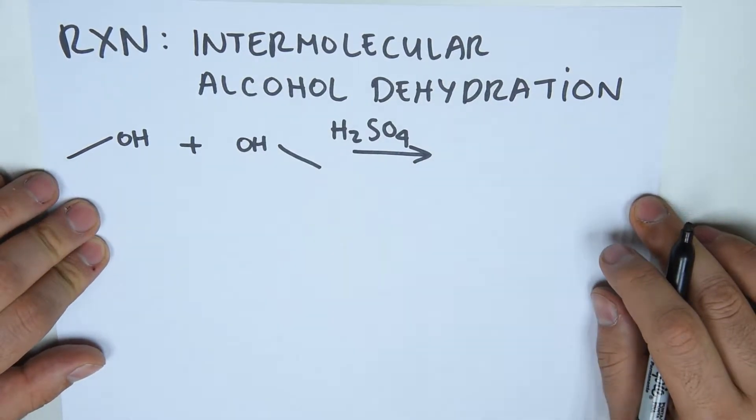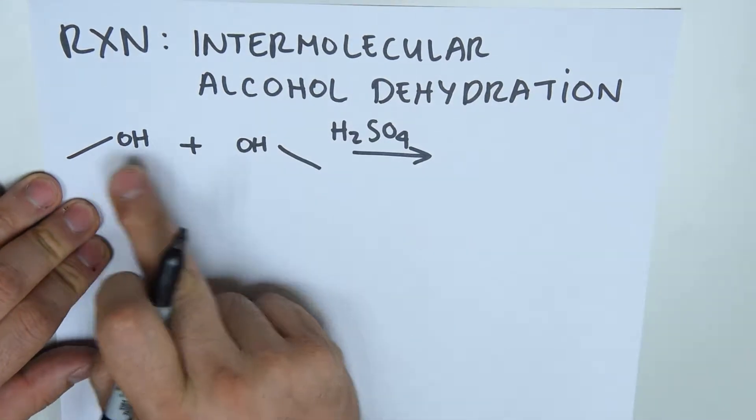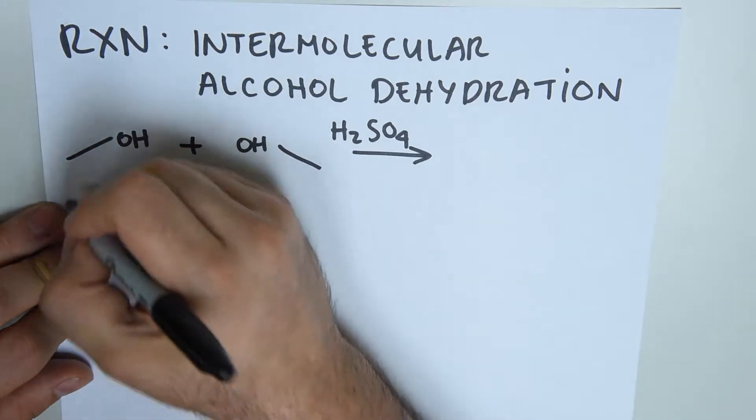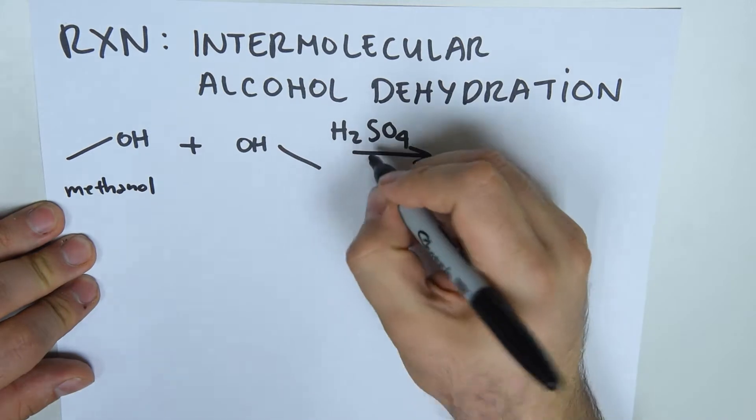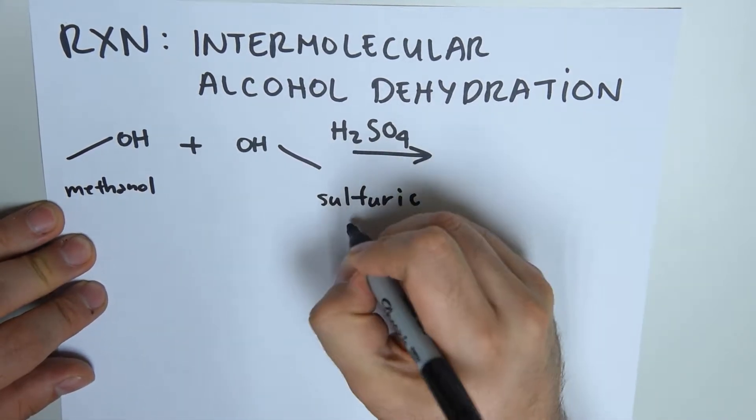Intermolecular alcohol dehydration is a reaction used to produce ethers. We start with two different alcohols. In this case, we are using the same alcohol, which is methanol. And we're using sulfuric acid as a catalyst. That's why we drew it on top of the arrow.